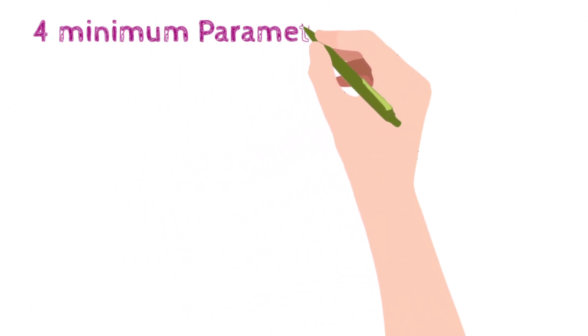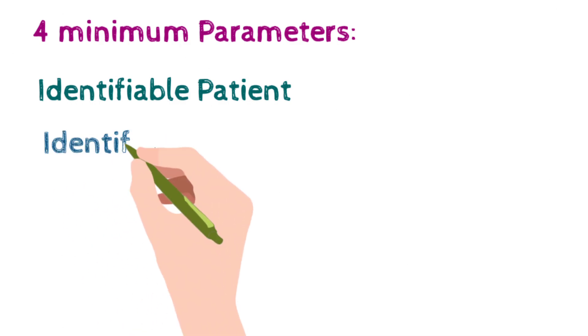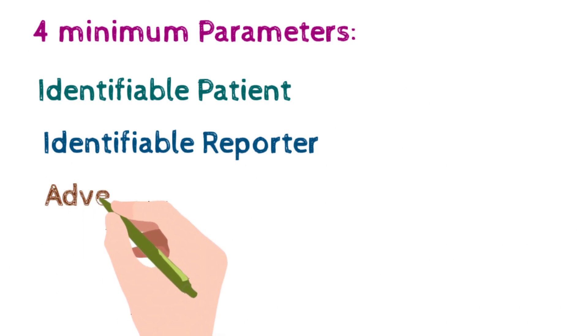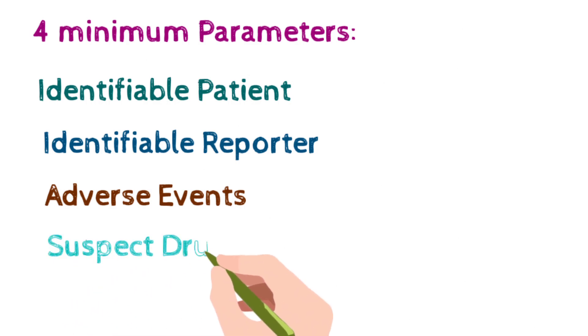While reporting, please keep in mind your report should contain minimum four parameters, also called the four minimum criteria of reporting. First is identifiable patient, which includes at least the patient's name, date of birth, gender, or age. Second is identifiable reporter — the reporter's name, who can be the patient themselves, a family member, or any other person. Third is adverse event — the event experienced by the patient due to use of the drug. Fourth is suspect drug — the name of the drug you think is responsible for the event being reported.